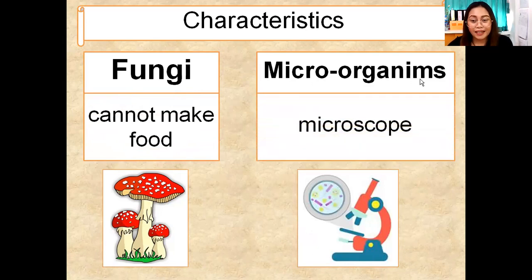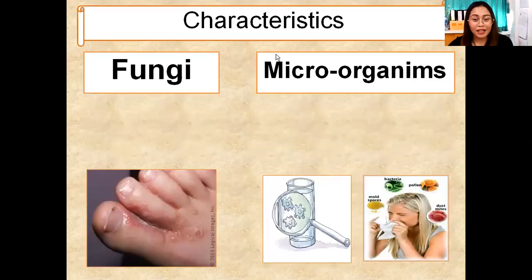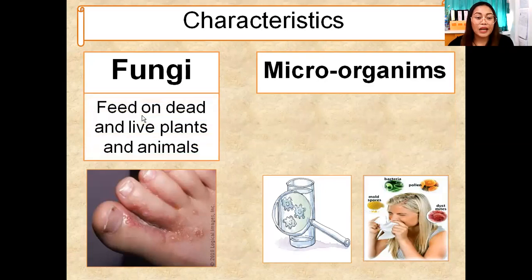For microorganisms, you are going to use this object — this is what we call a microscope. You use a microscope to see very tiny microorganisms, like bacteria. Next characteristic of fungi: fungi feed on dead and live plants and animals.